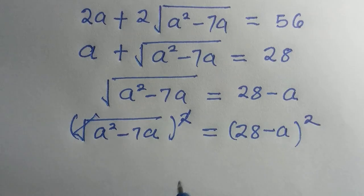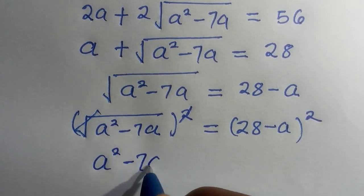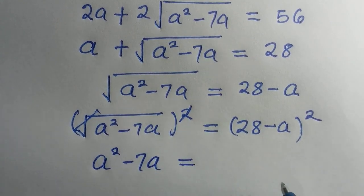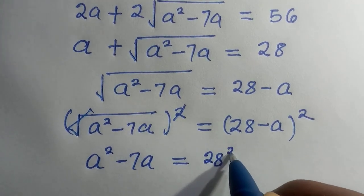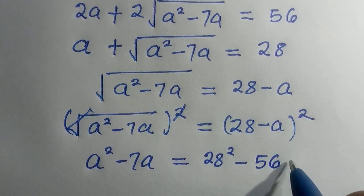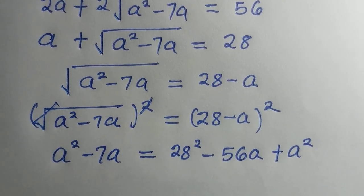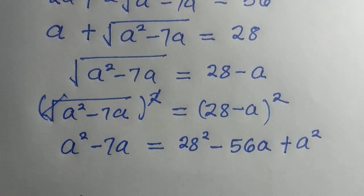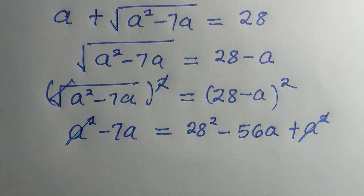So this cancels this, and we have this as a² - 7a equals, so when we expand this, we have it as 28² - 56a + a². That's what we have, but clearly this is a² and this is a², they cancel each other.